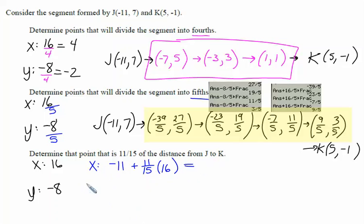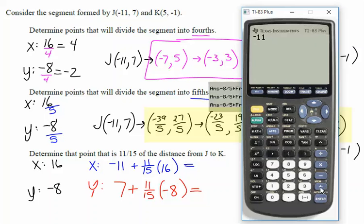and add 11 fifteenths of 16 to it. This will get us our new x-coordinate. We follow something similar for the y-coordinate. It started at 7, and we're going to add 11 fifteenths of the negative 8 to it, because we're going 11 fifteenths of the way across that line segment. So negative 11 plus 11 fifteenths times 16, we convert that to a fraction and hit enter. So the x-coordinate is 11 fifteenths.